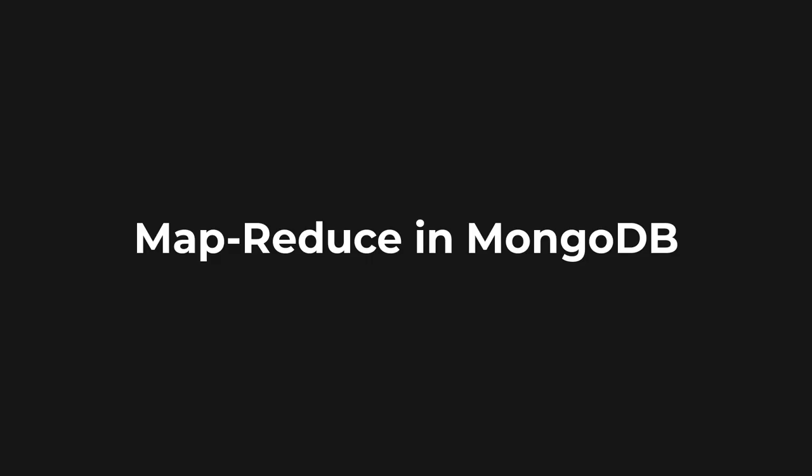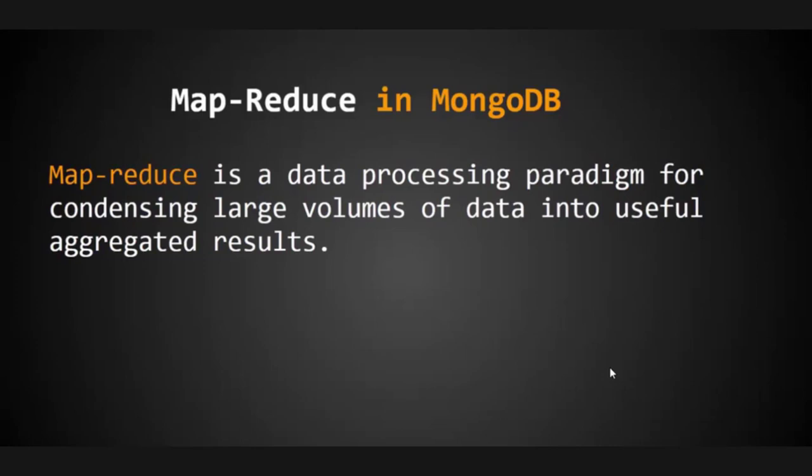Welcome back. In this section we are going to discuss a very important feature in MongoDB — that is Map Reduce. We are going to see how we can use the popular Map Reduce functionality in MongoDB for querying desired data. Map Reduce is a data processing paradigm for condensing large volumes of data into useful aggregated results.